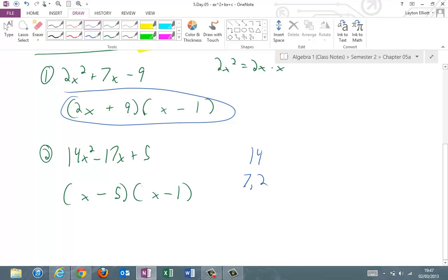So really what I want to do is kind of split 14 up. I'm going to look at 14 and say, well, I know 14 is also 7 and 2. If I put the 7 with the 5, it would give me 35, and that's too big. So if I put the 7 over here and the 2 over here, then I get negative 7, negative 10. That's negative 17. That's it. And again, check by FOILing. 14x² minus 7x minus 10x, and then net positive 5.